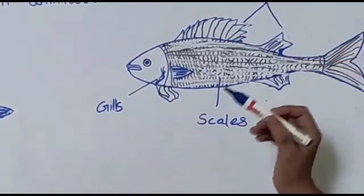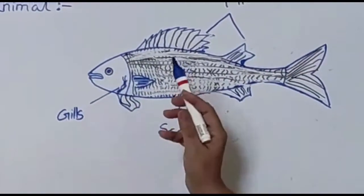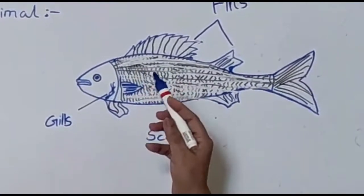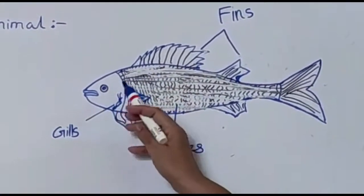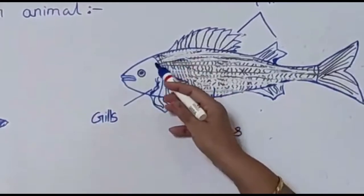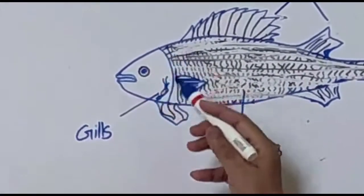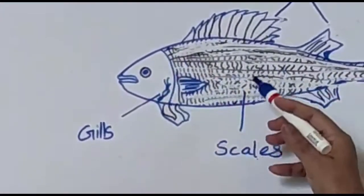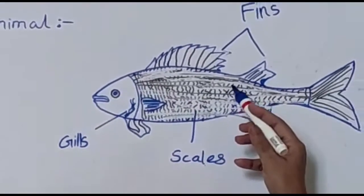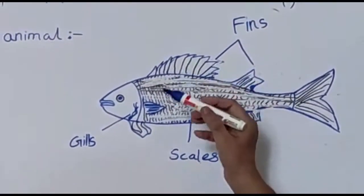Fish breathe with the help of gills. Their eyes have transparent eyelids. They have air bladders within the body to help them float.